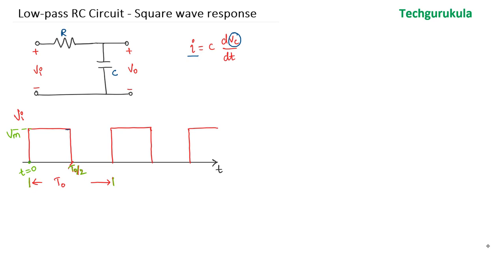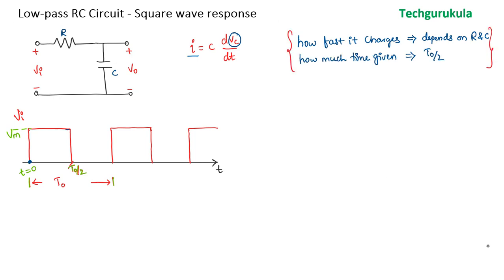The output voltage (shown in blue) will be 0 at t = 0. As time progresses, the capacitor charges through the resistor, and the output voltage increases. The rate at which the capacitor charges depends on both R and C — how fast it charges depends on R and C — and also on how much time is given for the capacitor to charge, which in this case is the pulse width T0/2. The shape of the output waveform depends on these parameters.